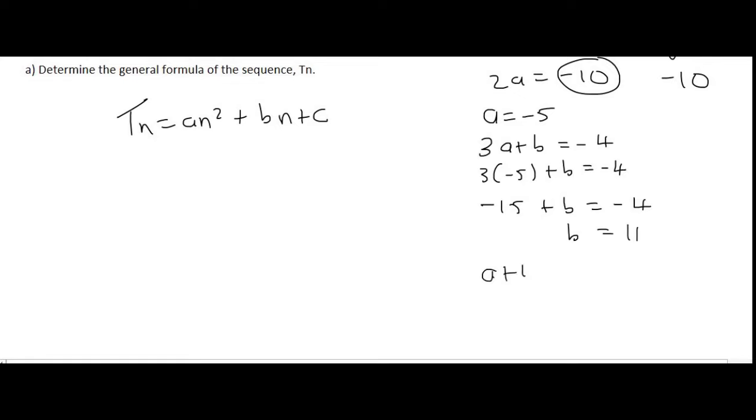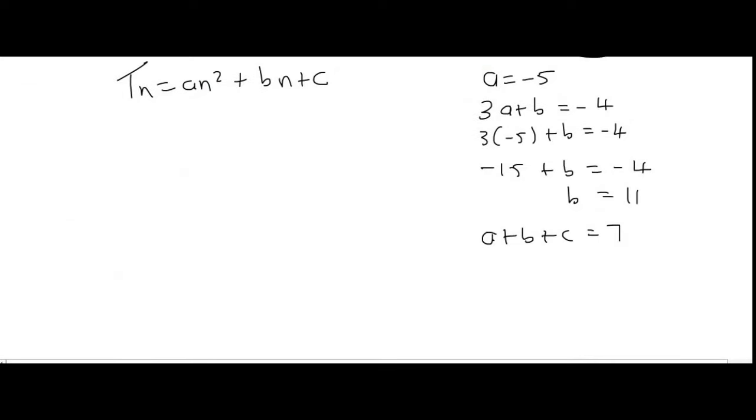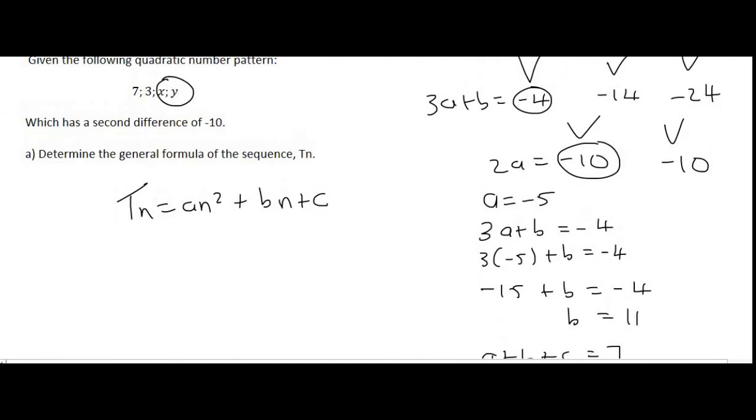And then the last one will be a plus b plus c should equal to 7. I got that from that over there. However, we know that a is minus 5, b is 11, c we don't know. If we have to then put the minus 5 and the 11 together, that's 6 plus c equals to 7. Solving for c, you should get an answer of... Wait, let's first fill in the actual answers. That's minus 5n squared, b we said was 11, and c we said was positive 1.